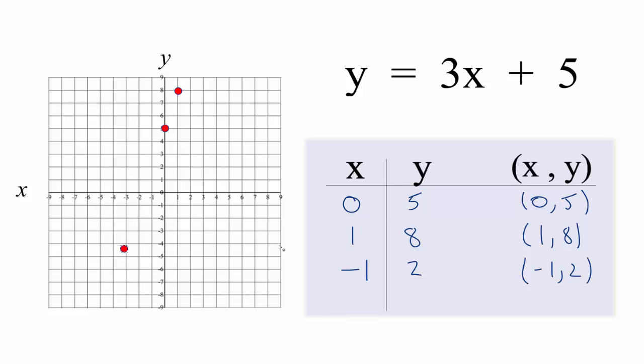We have x is negative 1, y is 2, so negative 1 up 2. You can see we have these three points and if we put a line through them like this, that's our graph. Let's put some arrows to show that this goes to infinity, and that's the graph for y equals 3x plus 5.